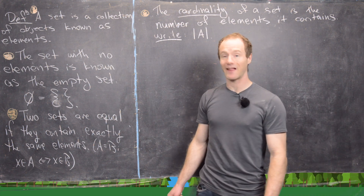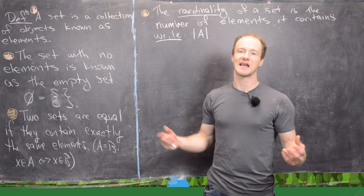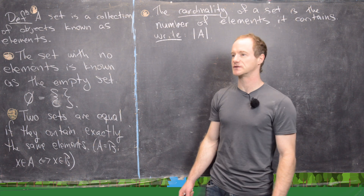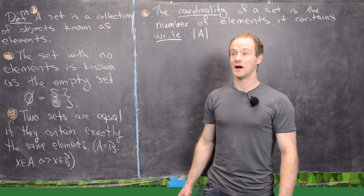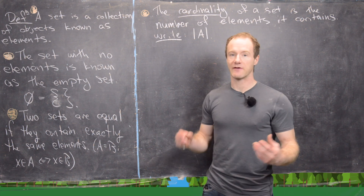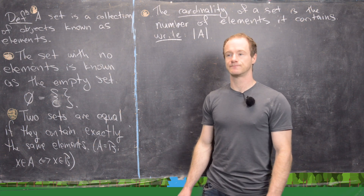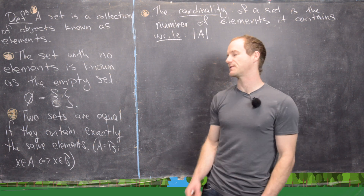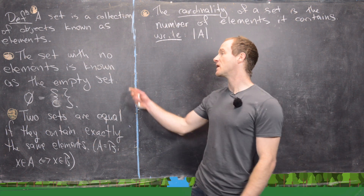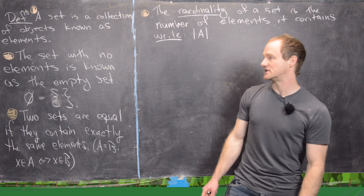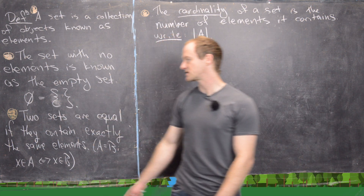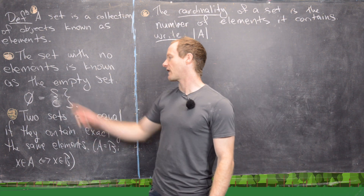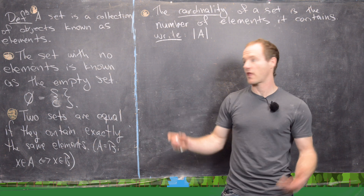As a definition, a set is a collection of objects known as elements. You might ask, is everything a set? That's a bit tricky and gets into abstract set theory — not every collection of objects is a set; there are things called classes. The set with no elements is known as the empty set, generally written as a zero with a cross through it, or less commonly as a set with nothing in it.